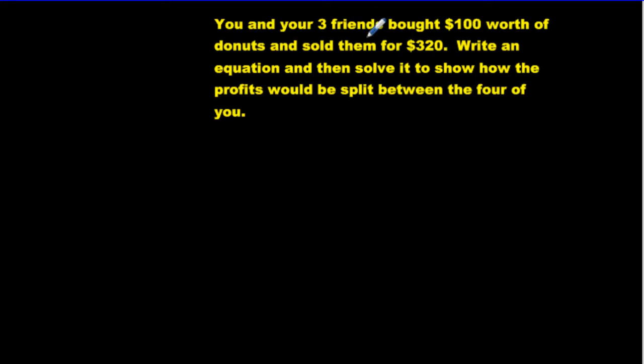You will also see some problem solving scenarios with this BEDMAS system we're working on. Here we have you and your 3 friends. So we have 4 people all together. Bought $100 worth of donuts. And then sold them for $320. Sort of like a bake sale, right? You buy something for one price. And then you sell it for more. To make money for a field trip. Or something like that. And then we're asked to write an equation and then solve it. So we have to write the equation. You have to write the equation. And then we have to solve the equation. To show how the profits would be split between the 4 of you.